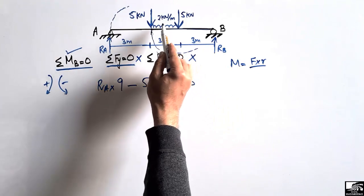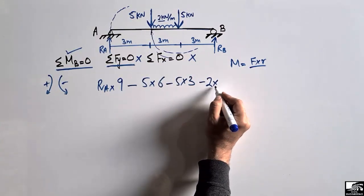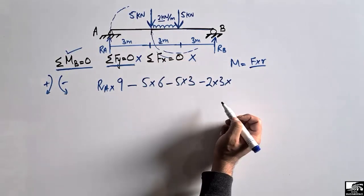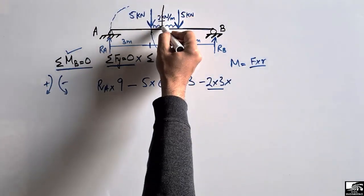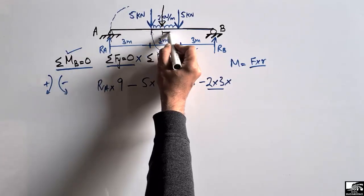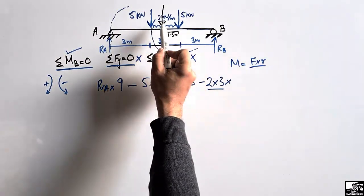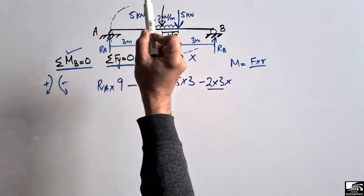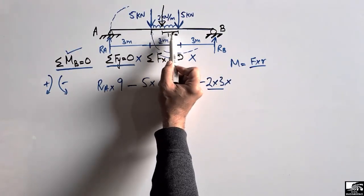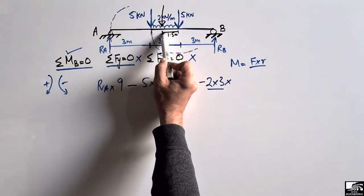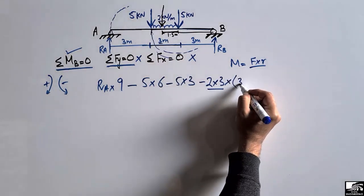For the distributed load of 2 kN/m over 3 meters, we convert it to an equivalent point load of 2 × 3 = 6 kN acting at the center of the distributed region. The center is 1.5 m from the right end of the distributed load, so the total distance from that point to B is 1.5 + 3 = 4.5 meters.